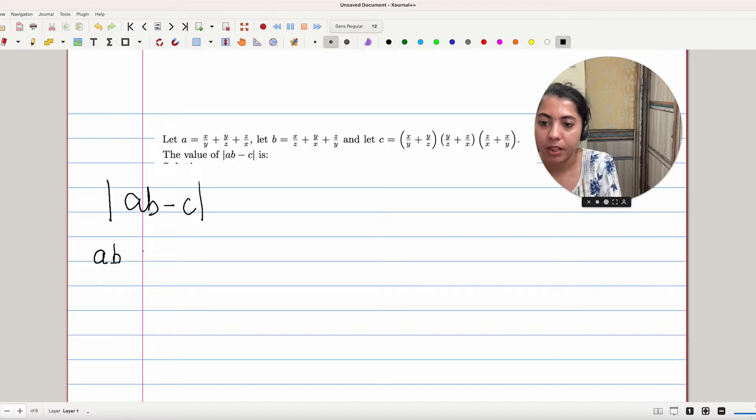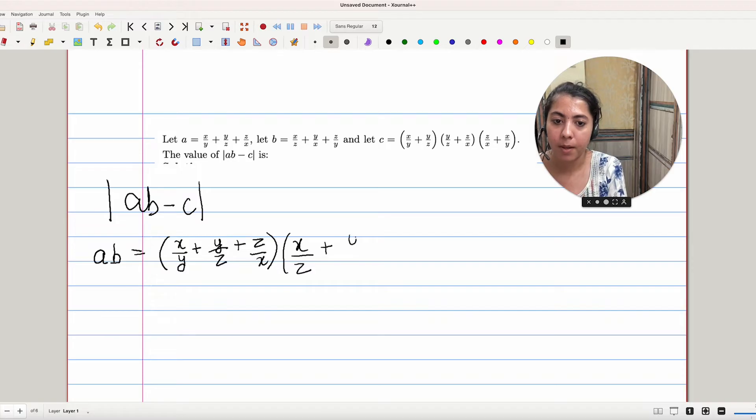A times B will be given as (X/Y + Y/Z + Z/A) times (X/Z + Y/X + Z/Y). Let's solve this expression. We'll have 9 different terms.